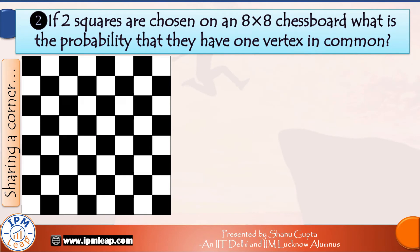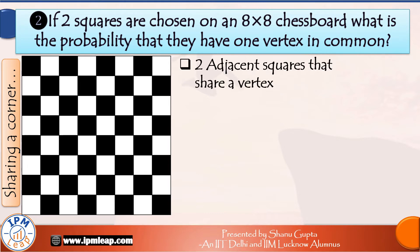Moving on to our next question: what is the probability that the chosen squares will have one vertex in common? By one vertex they mean exactly one vertex in common, because recall in the last question the adjacent squares which shared one side had two vertices in common. So if exactly one vertex — or one corner — is common, the two squares will either be positioned diagonally like this or like this. There is no other possibility. In either case, the common vertex cannot lie on the boundary of the chessboard; it will be an inner vertex.